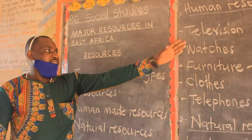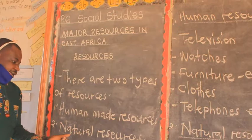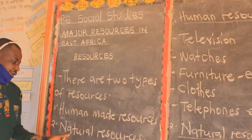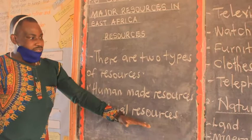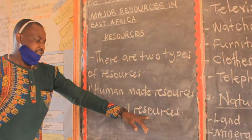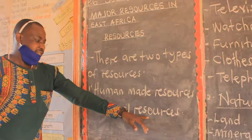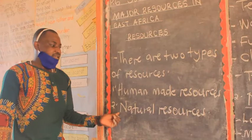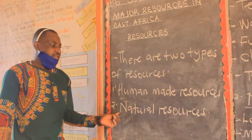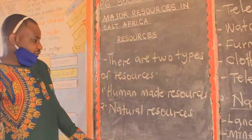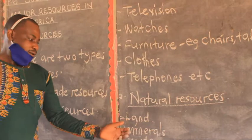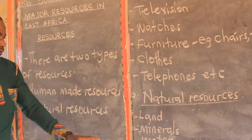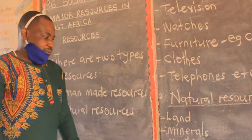Natural resources are components of the environment that people use to satisfy their needs, and they exist on their own. Examples of natural resources include land, minerals — such as copper, clay, sand, and zinc — and water, including major lakes and rivers in Uganda.